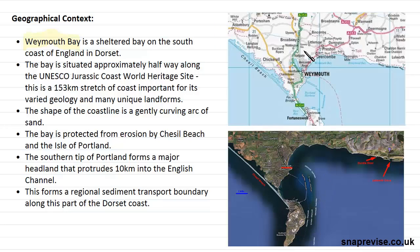The bay is situated approximately halfway along the UNESCO Jurassic Coast World Heritage Site. This is a very important place — a 153 kilometre stretch of coastline which is really significant because it has very varied geology and also many unique coastal landforms.